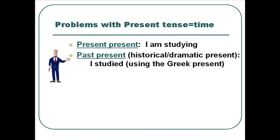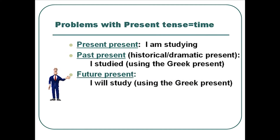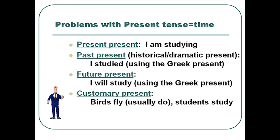However, when you actually get into how this present tense form is used, it's often used for the past. For example, you have a historical or dramatic present, and it's translated 'I studied.' The Greek is actually in the present, but the English translates it as a historical past. Sometimes the present tense forms are used to portray the future — 'I will study' — yet the Greek present tense form is used to portray a future event. Sometimes you have what's called a customary present: 'Birds fly' — something they usually do.